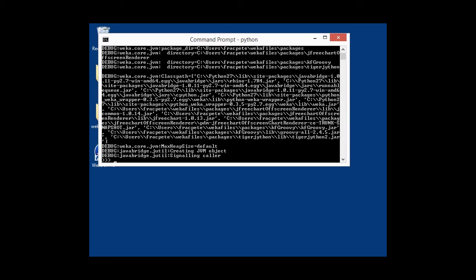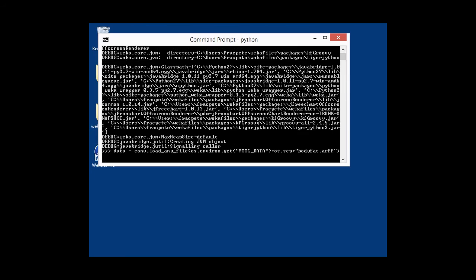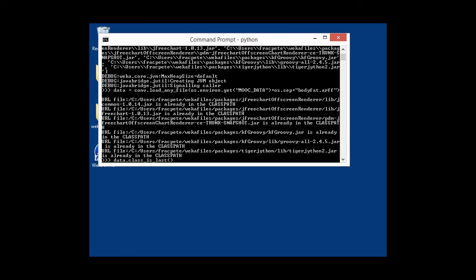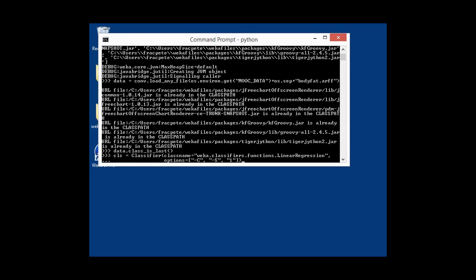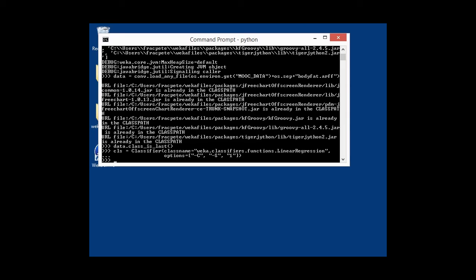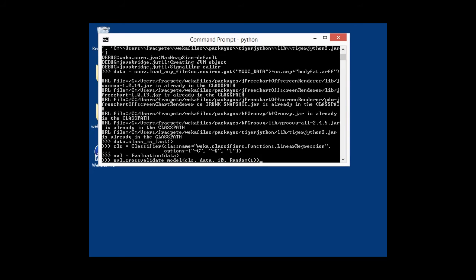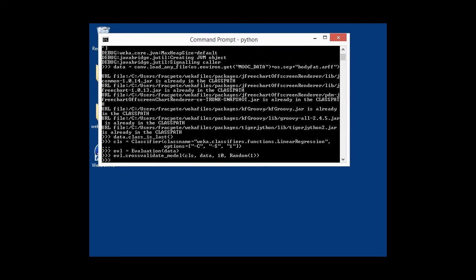We are loading our body fat dataset in, setting the class attribute. Then we're going to configure our linear regression. Once again, turning off some bits that make it faster. And we're going to evaluate it on our dataset with 10-fold cross-validation done.